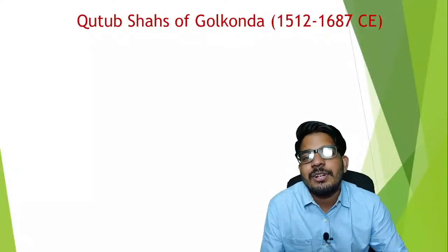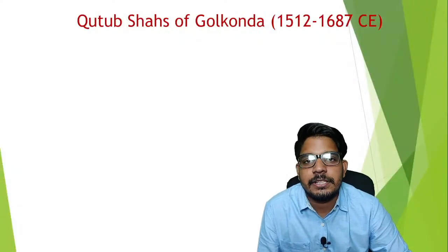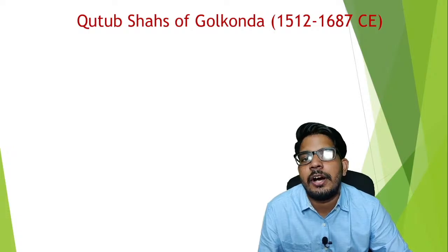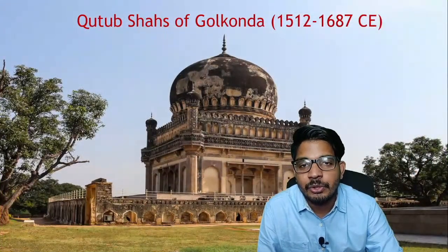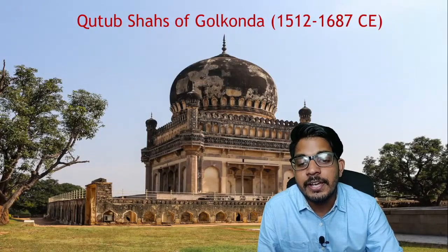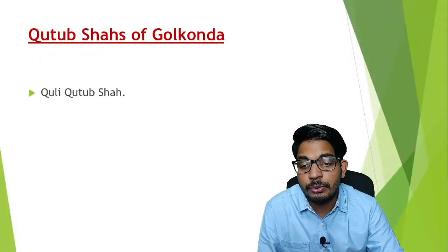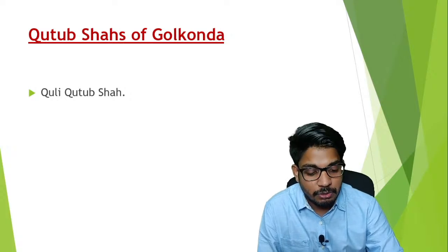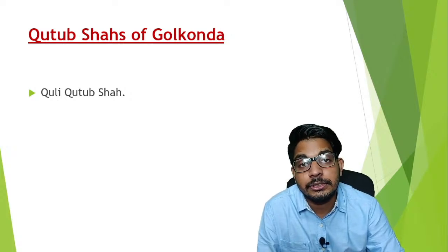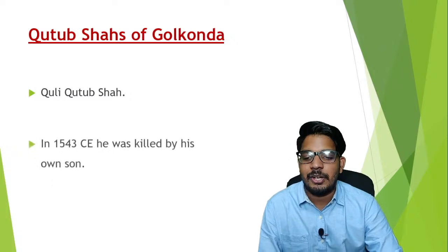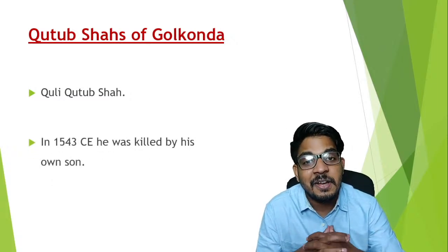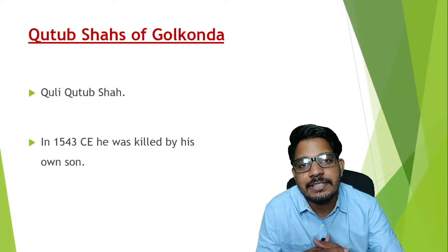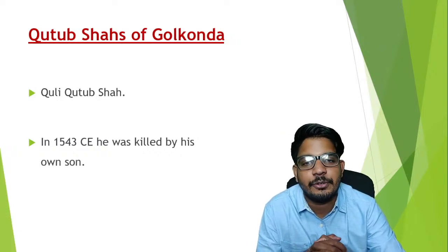Now let's move to the third principality — the Qutb Shahs of Golconda. It was founded by Quli Qutb Shah. He was a great ruler and an efficient administrator, but unfortunately he was killed by his own son in 1543.